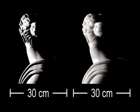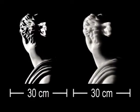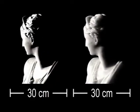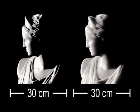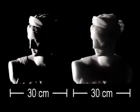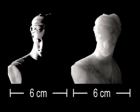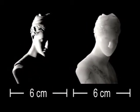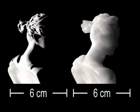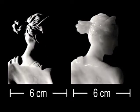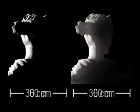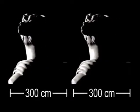By changing the scale of the geometry while leaving the material parameters the same, the marble bust becomes a tiny figurine, for which translucency dominates the appearance, or a large statue, which looks almost opaque.